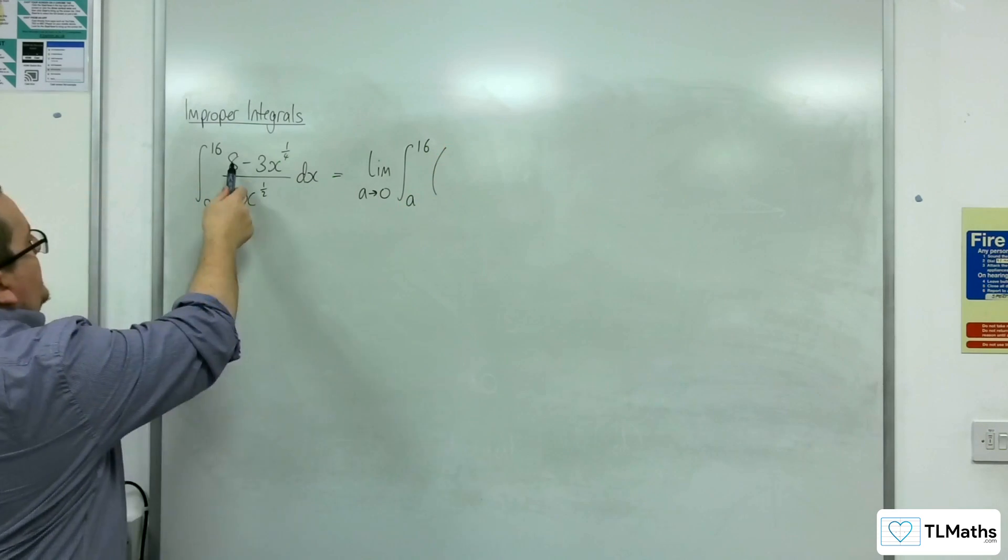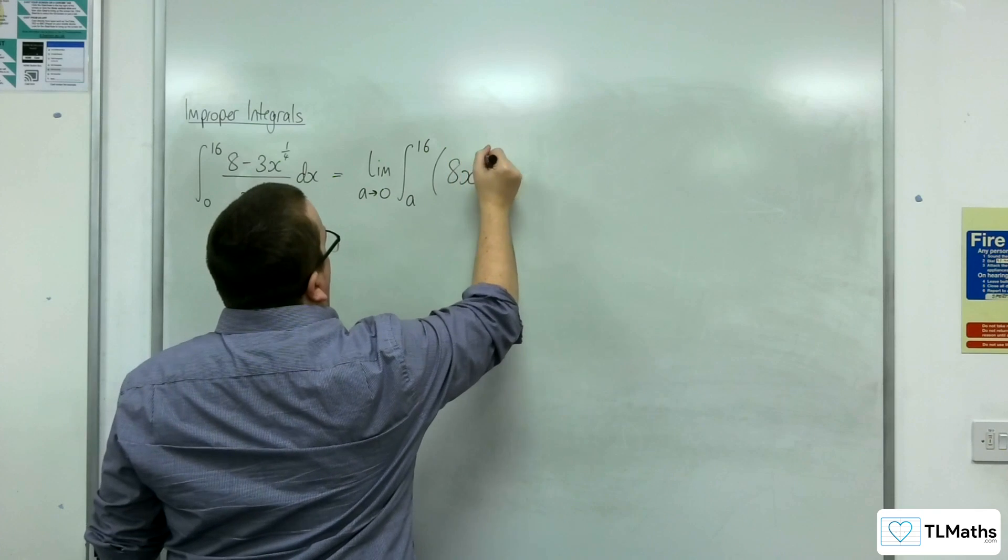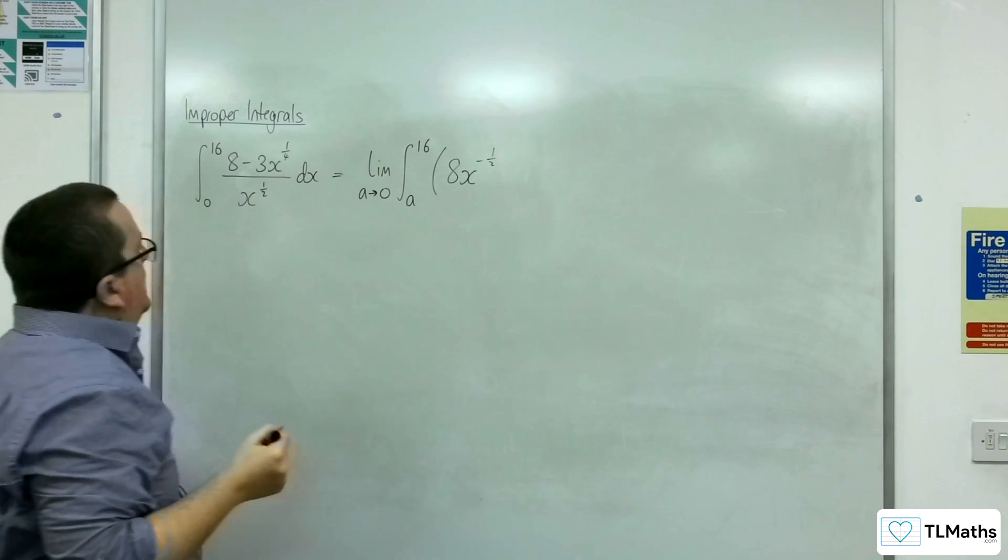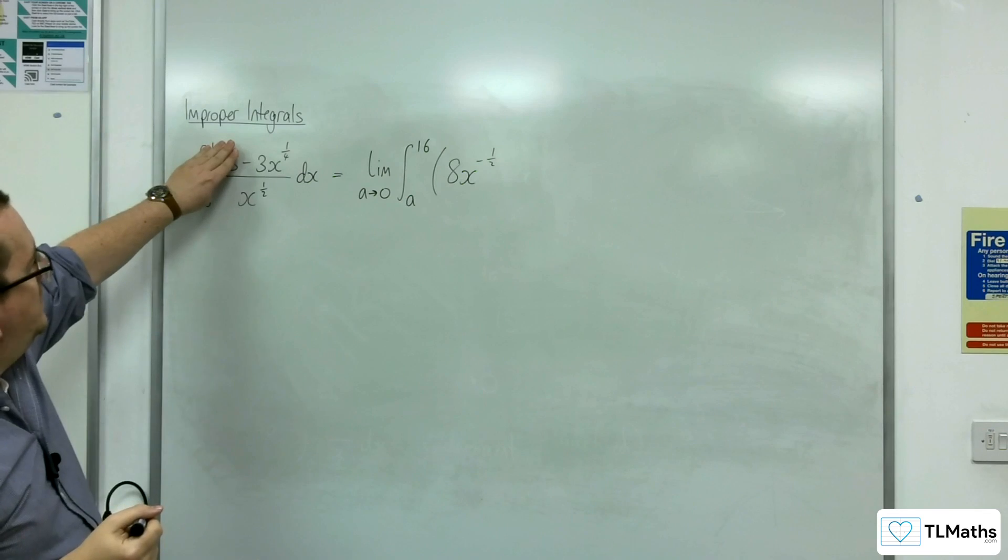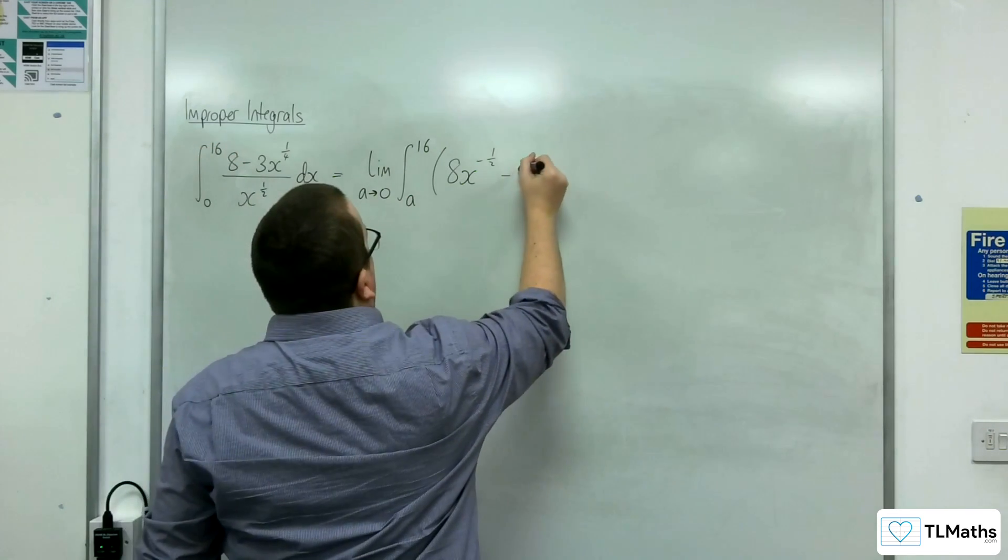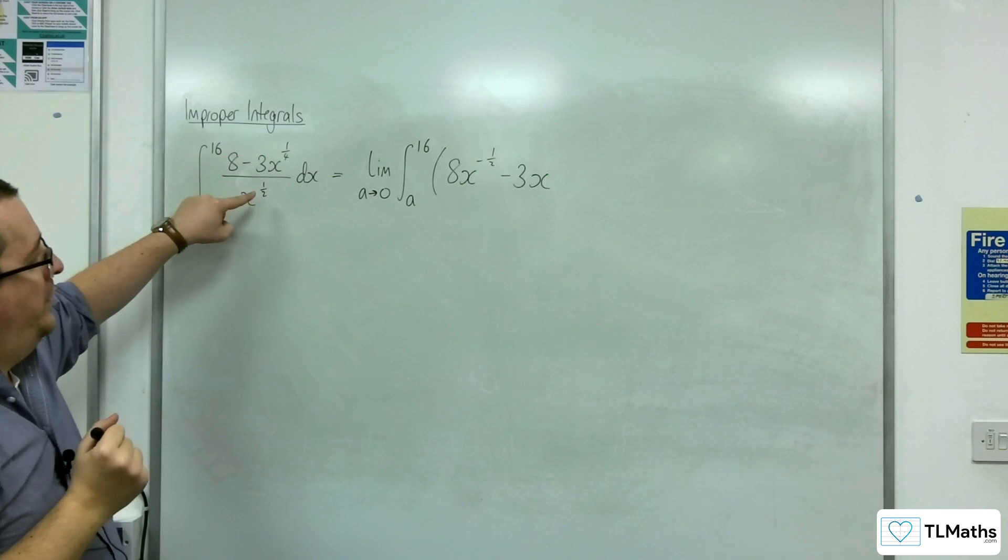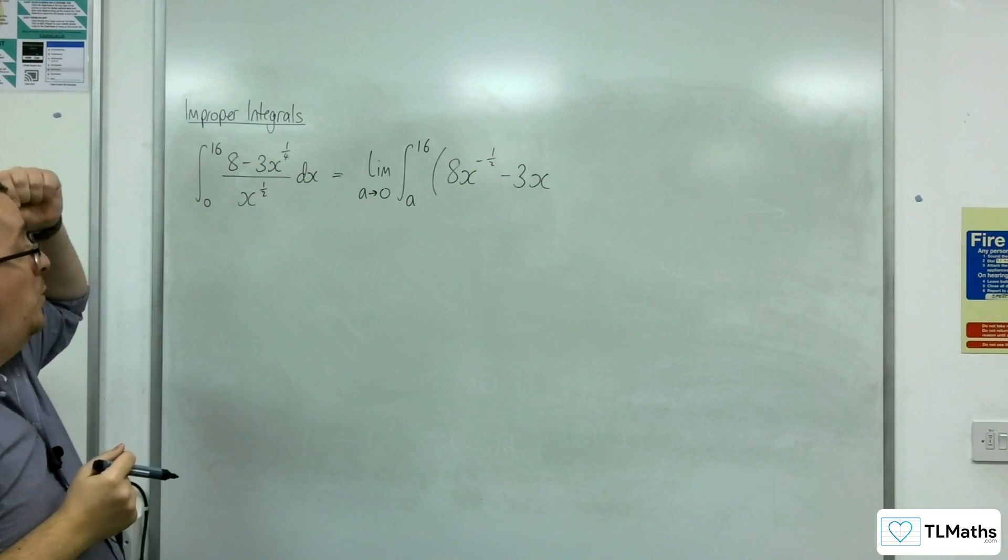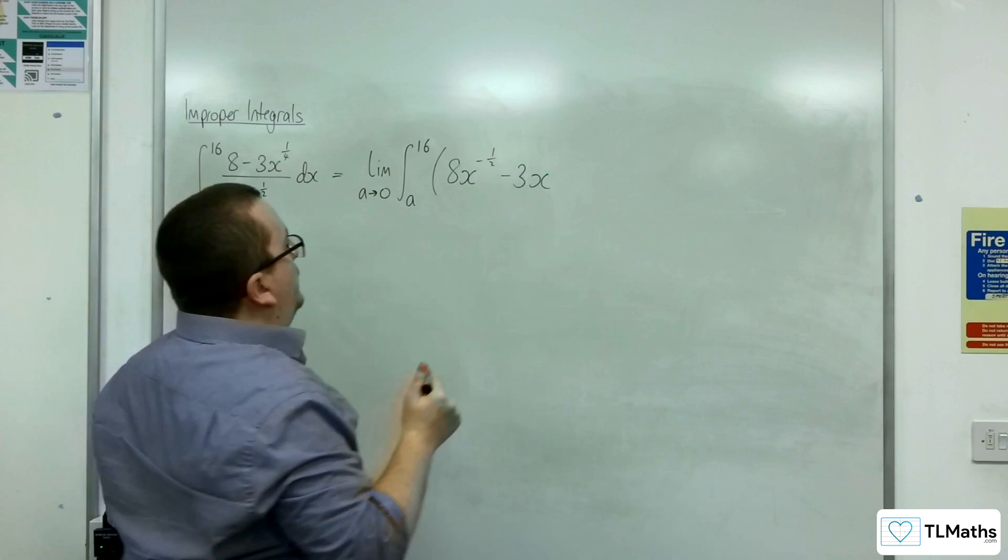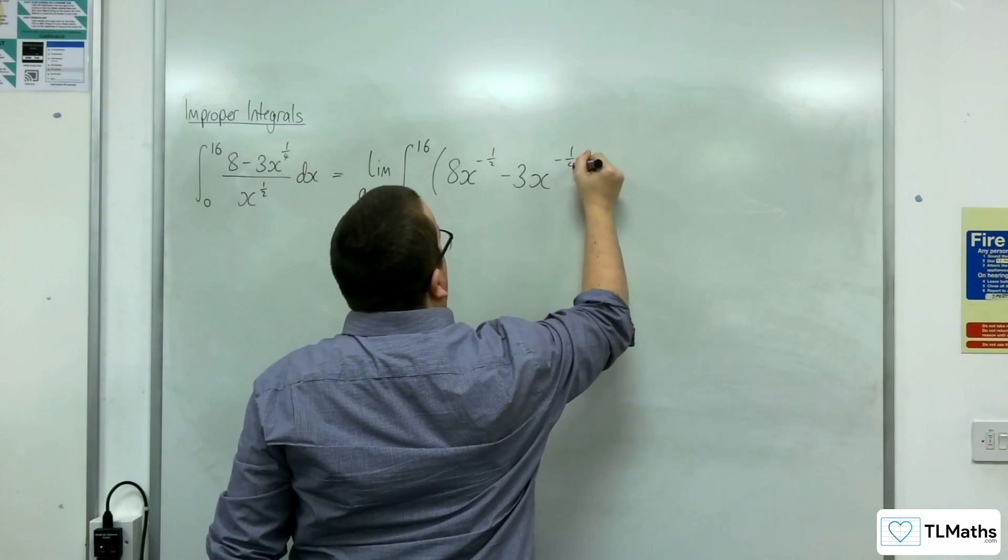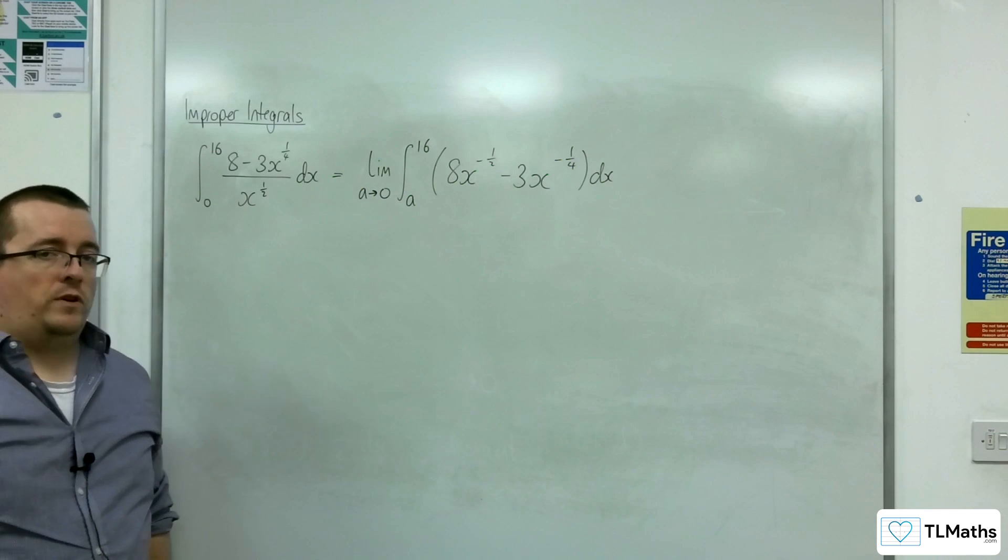so we're going to have 8 over x to the half. So I'll write that as 8x to the minus a half. And then we've got minus 3x to the quarter divided by x to the half. So we'll have minus 3x to the power of, so 1 quarter take away 1 half, so that would give us minus a quarter dx. And so this is what we're trying to evaluate.